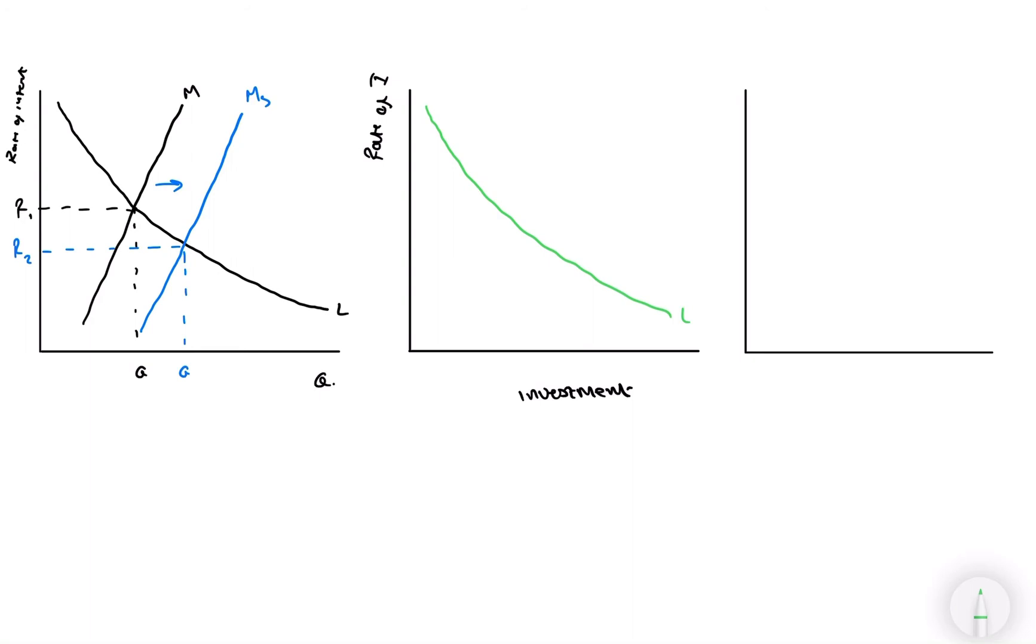And from our graph, what we can see is that at the original interest rate, before we altered money supply, we were at this point of interest, obviously, but at this I_E for equilibrium level of investment. However, because the interest rates have decreased and because it's downward sloping, what you can see is a relative increase in investment.